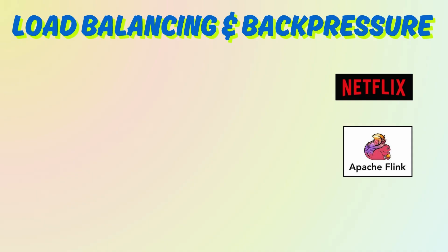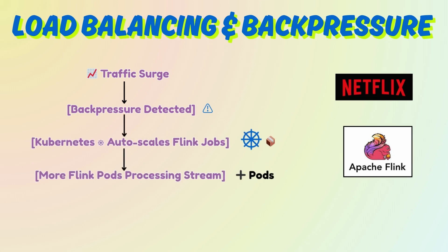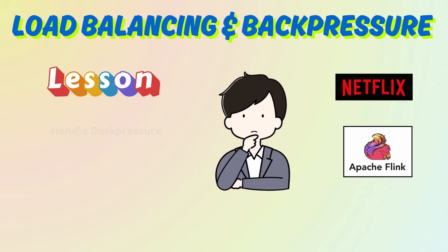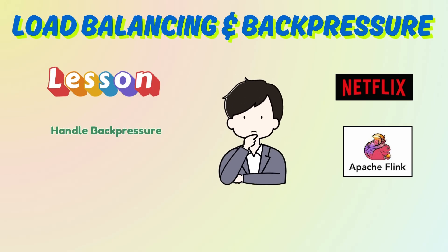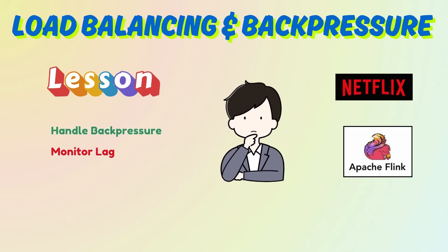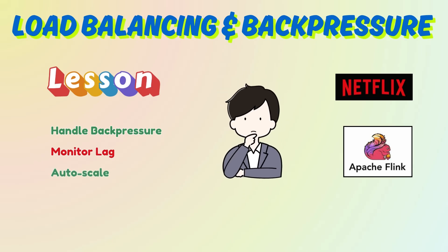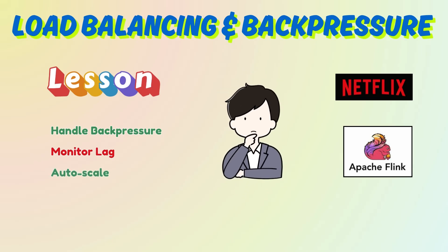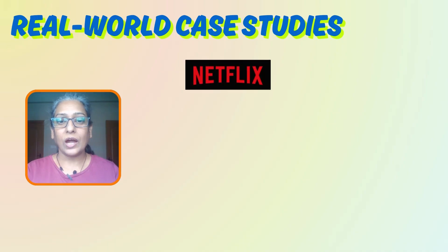Last but not least: load balancing and back pressure handling. Netflix built their streaming architecture to handle insane spikes by reacting to back pressure and auto-scaling Flink jobs using Kubernetes. The lesson: never let slow consumers choke the pipeline — monitor lag and auto scale intelligently.